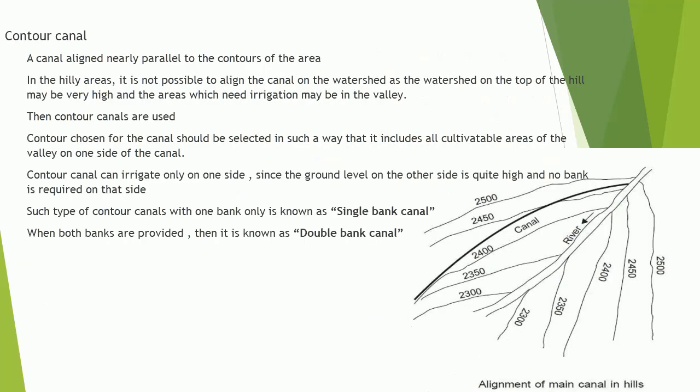Contour canal — a canal aligned nearly parallel to the contours of the area. In hilly areas it is not possible to align the canal on the watershed, as the watershed on top of the hill may be very high while the areas needing irrigation may be in the valley. Contour canals are then used. The contour chosen should include all cultivatable areas of the valley on one side. A contour canal can irrigate only on one side; if it has one bank only it is known as a single bank canal, and when both banks are provided it is known as a double bank canal.